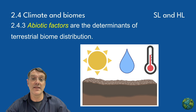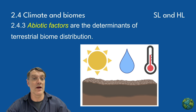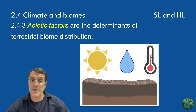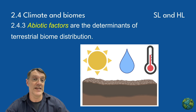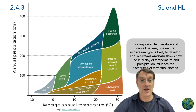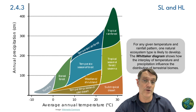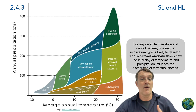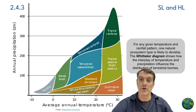Abiotic factors are the non-living components that determine where different biomes develop. For any given combination of temperature and rainfall, a particular type of natural ecosystem is likely to emerge. The Whittaker diagram we see here shows how temperature and precipitation work together to create different biome types, from tundra to tropical rainforest.